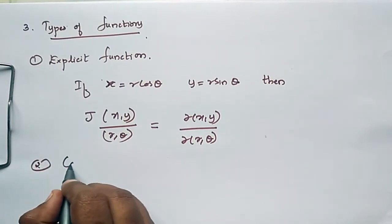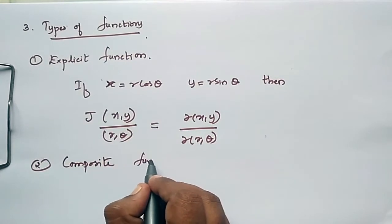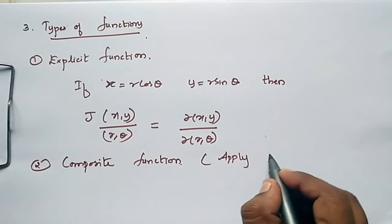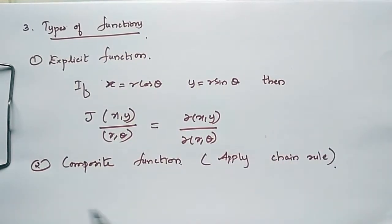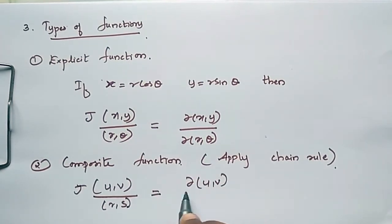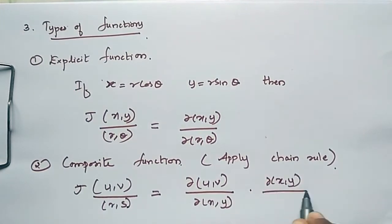Number two: composite functions. You have to apply the chain rule here. J of (u,v) by (r,s) is equal to ∂(u,v)/∂(x,y) into ∂(x,y)/∂(r,s).